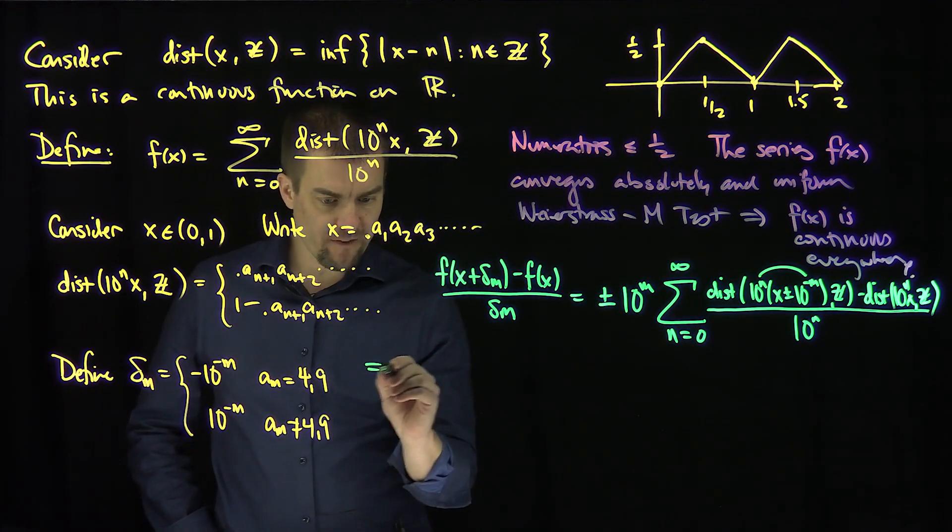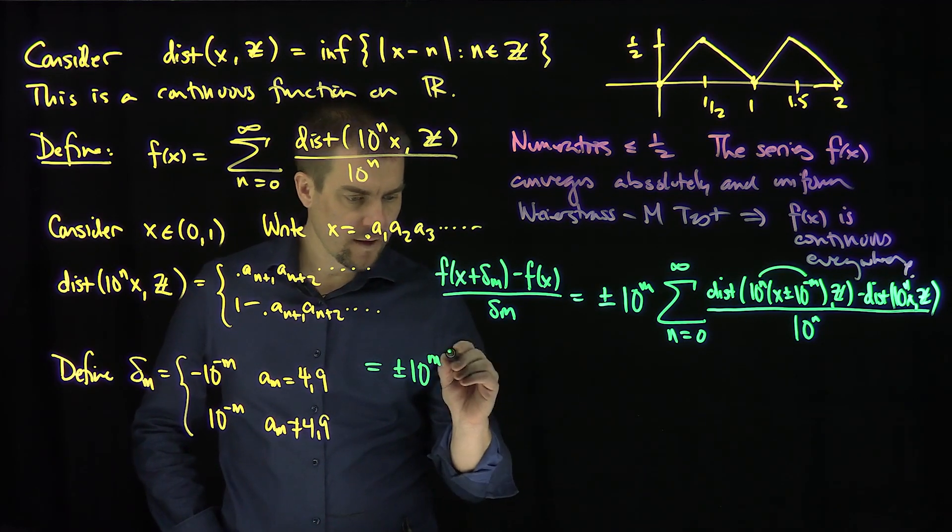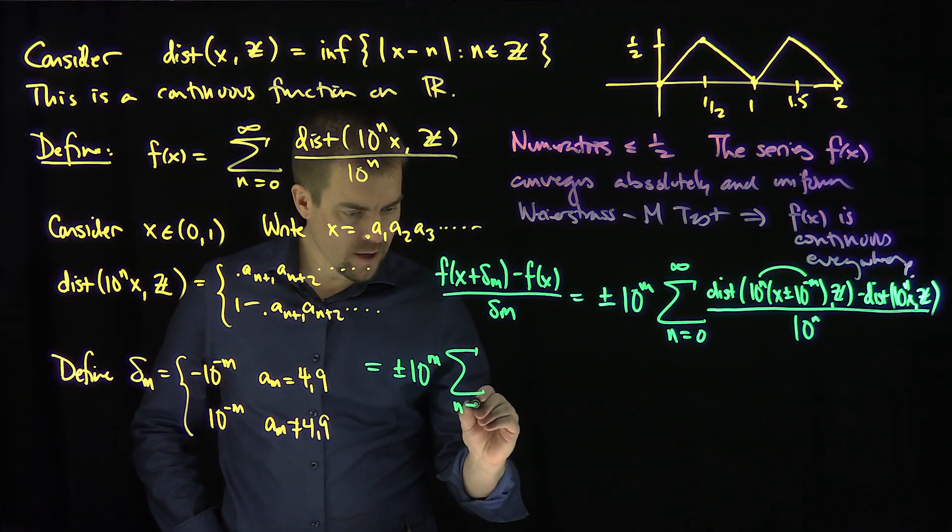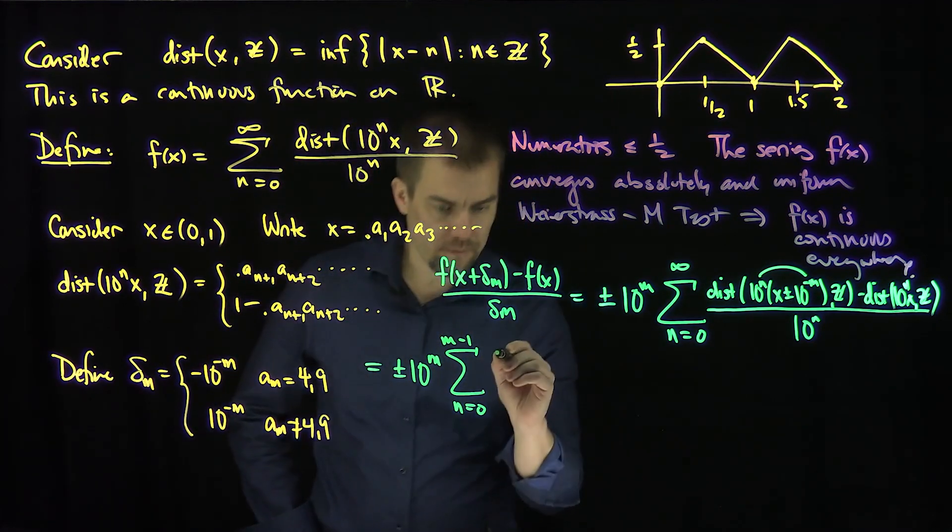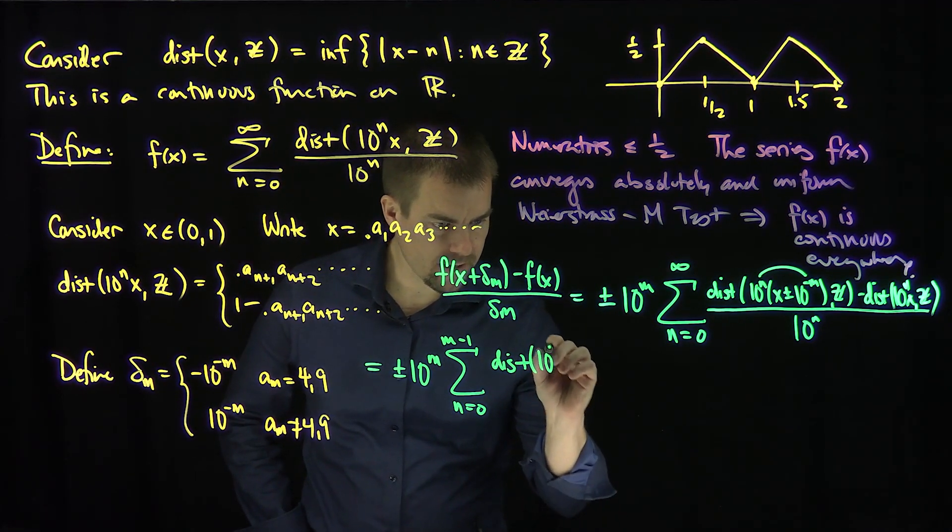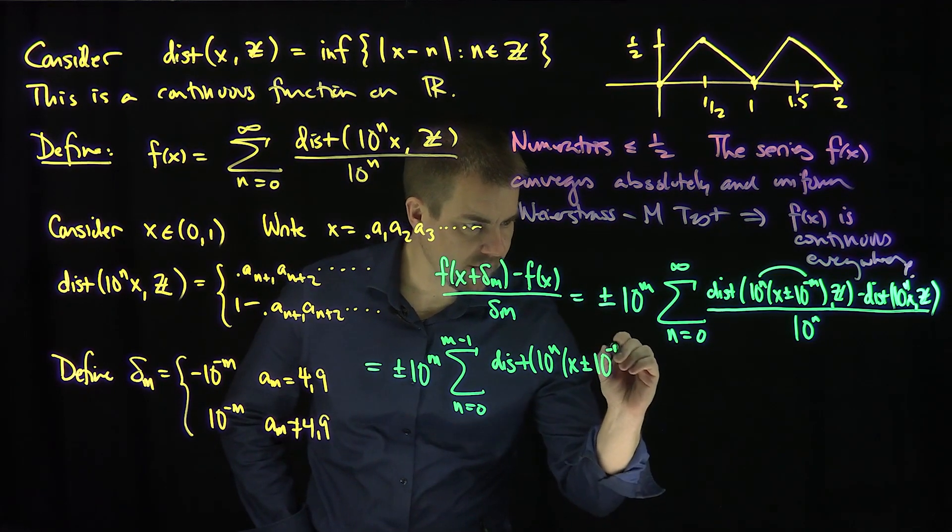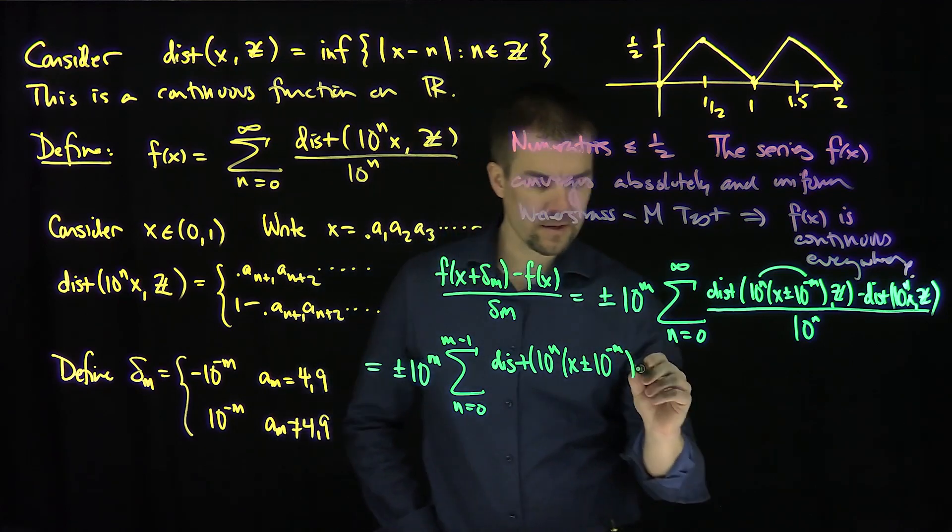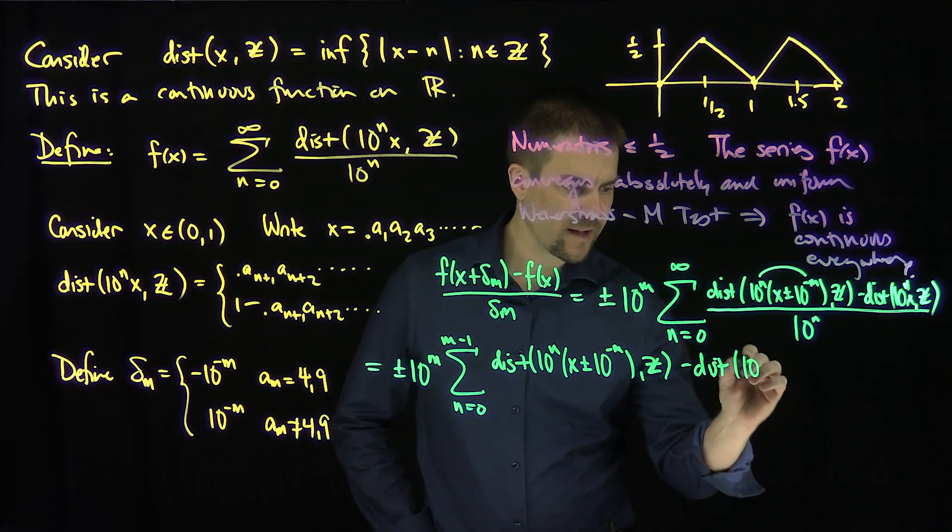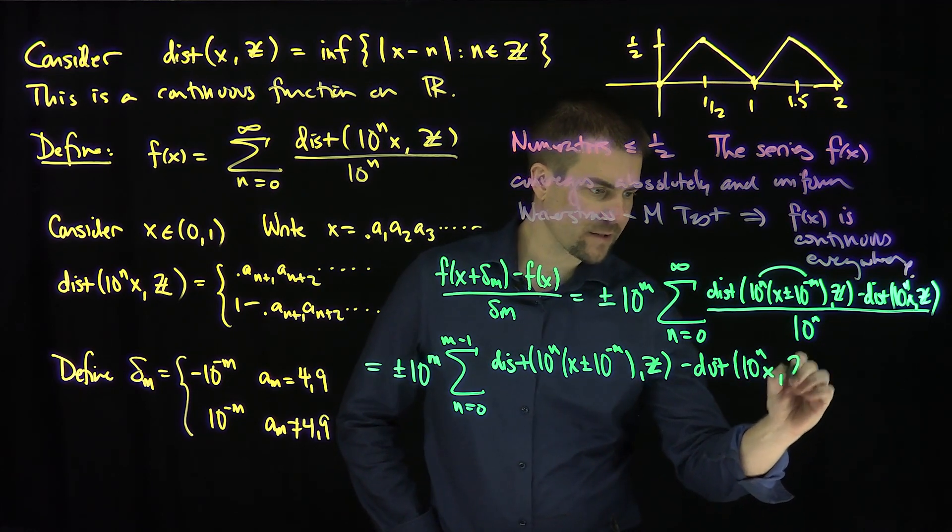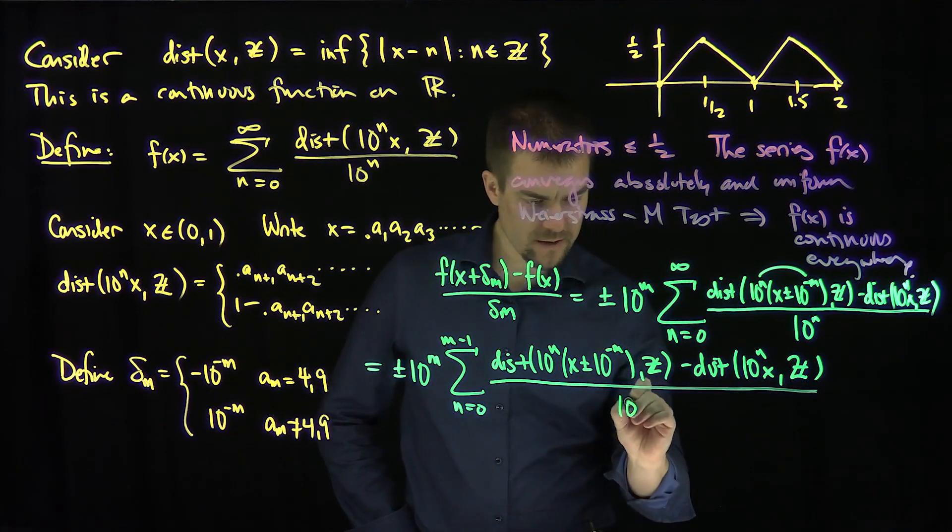And so what we're going to have over here is plus/minus 10^m times the sum, n goes from zero up to m minus one, of [distance(10^n x ± 10^(-m), Z) - distance(10^n x, Z)] all over 10^n.